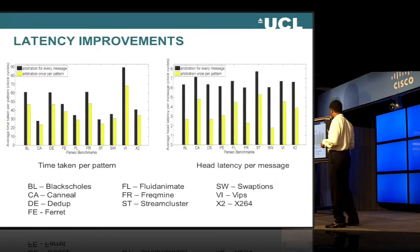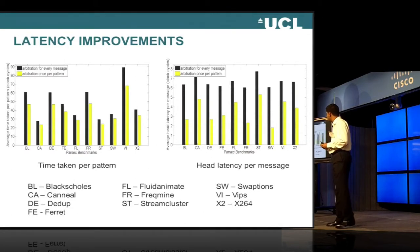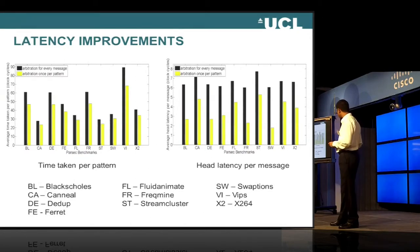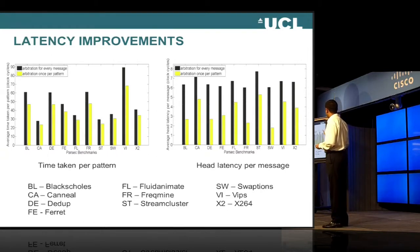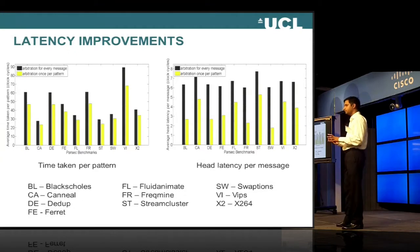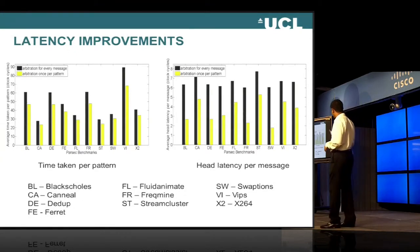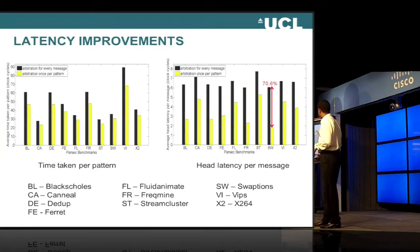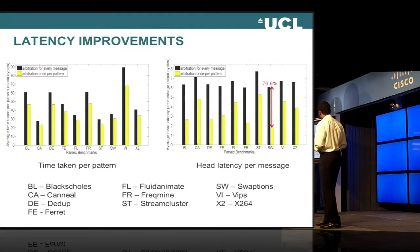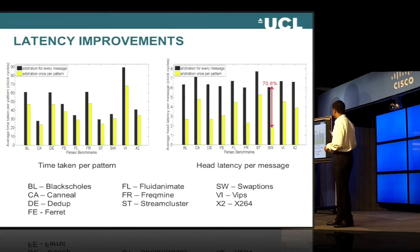The next graph removes this dependency. We consider only the head latency per message. We can see we get much larger savings if we do not consider the serialization dependency. For the swaptions benchmark, we have up to 70.6% saving in the average head latency, which is quite a lot. But we need now to consider what the contentions are.